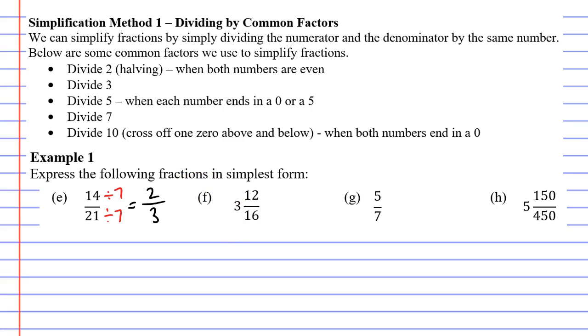Moving on to question F, you will notice we have a mixed numeral. We have a whole number, and then a fraction. When we simplify these, we really focus just on the fraction for now. It is 12 over 16. You'll notice that both of these numbers are even, which means we can divide by 2, which is the same as halving our numbers.